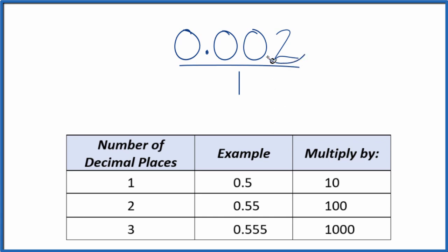Next I can see we have one, two, three decimal places. When we have those three decimal places we multiply by 1,000 and that'll give us a whole number. So we take 1,000 times 0.002 and we end up with just 2, and that's our whole number.